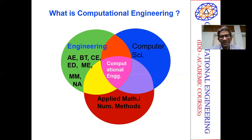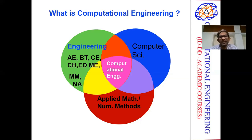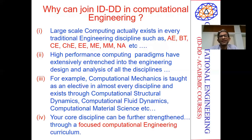Essentially, computational engineering is going to build upon whatever is your existing discipline. The core of computational engineering is going to be something along the following lines — surely for students with aerospace, biotechnology, chemical engineering, mechanical, material science, and naval architecture kind of backgrounds.